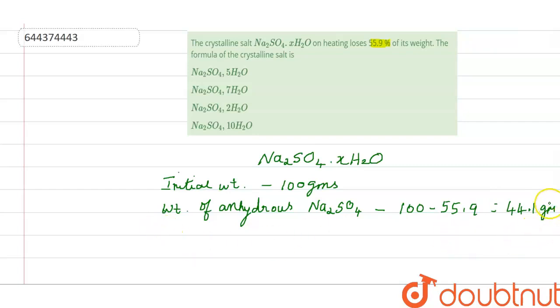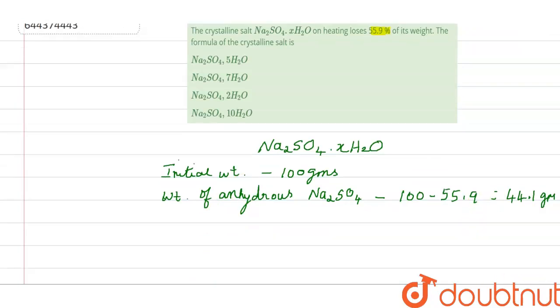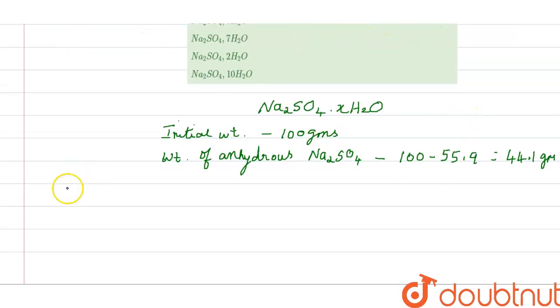So 44.1 grams of anhydrous sodium sulfate is associated with water is 55.9 grams. With this, what do you understand? That we understand that 44.1 grams of anhydrous sodium sulfate is associated with water equals 55.9 grams.